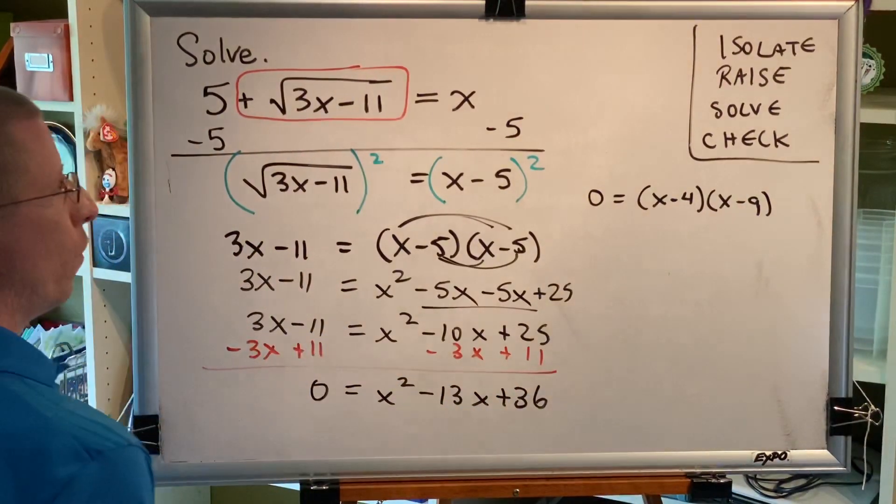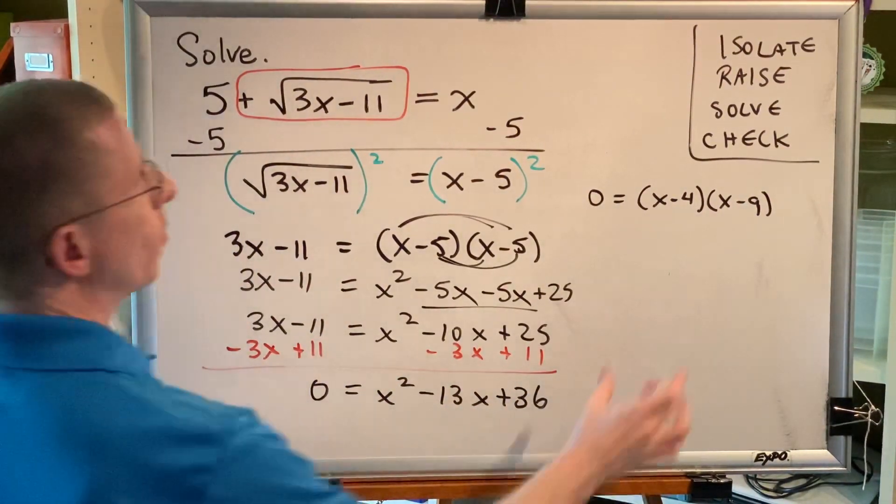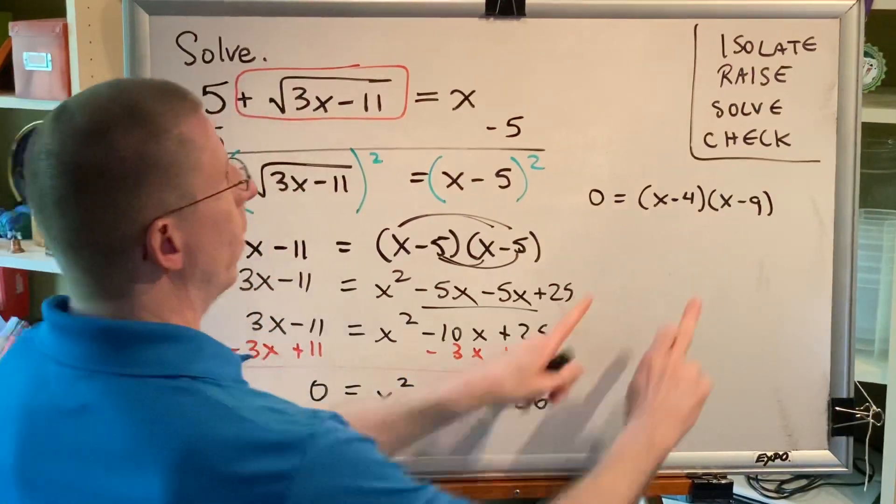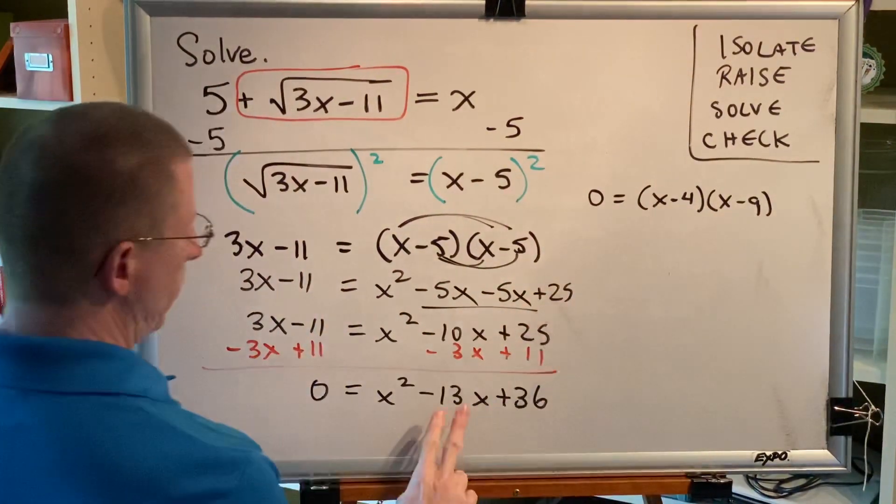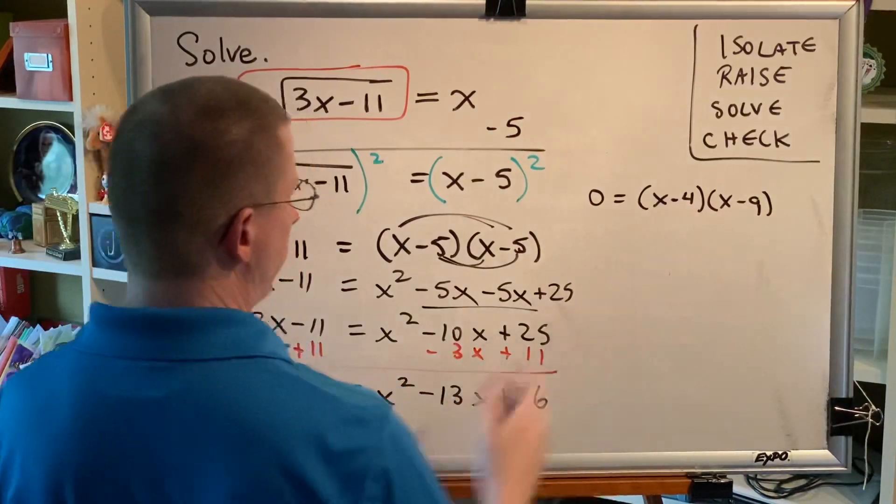You can always check to see if you factored correctly by using multiplication. In this case, FOIL: x squared minus 9x minus 4x makes the minus 13x plus 36.